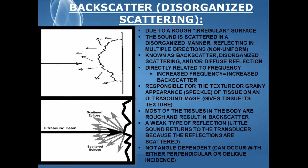Most of the tissues in the body are rough and result in backscatter. Note that this is a weak type of reflection because little sound returns to the transducer, as the reflections are scattered in multiple directions. Backscatter is not angle dependent and can occur with either perpendicular or oblique incidence.